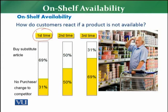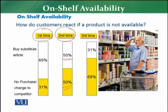The second time, if the customer has visited the store and still the planned product is not available, 50 percent of the time the customer will buy a substitute product. The remaining 50 percent of the time, the customer will not purchase from that retail store, or will buy from a competitor — meaning the customer shifts to the competition.